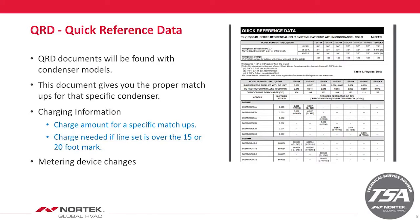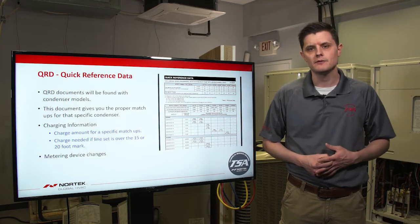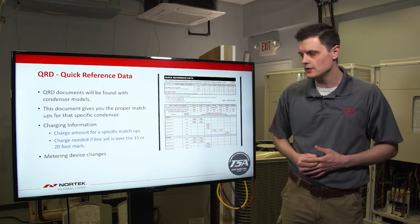The next thing we'll look at is our QRD document. The QRD document is found in each of our condenser models, but we also post it on our literature library if we're going to a job site after that equipment has been installed. The document gives you a proper matchup for that specific condenser and also gives you charging information—the charge amount for that specific matchup, because if you have a two ton paired with a two ton, you may actually need to add an additional amount of refrigerant, and that will be found on the QRD.